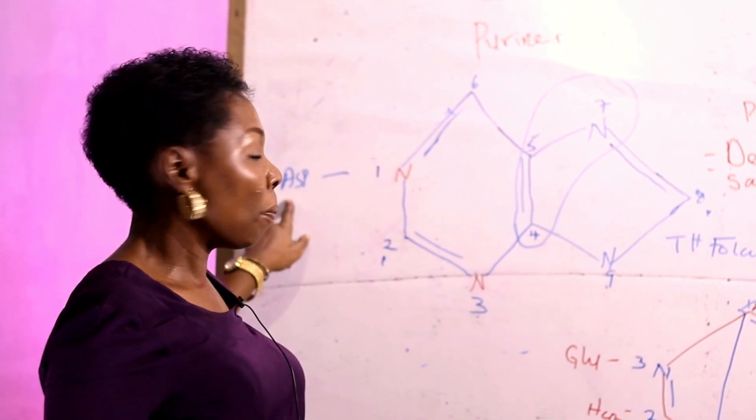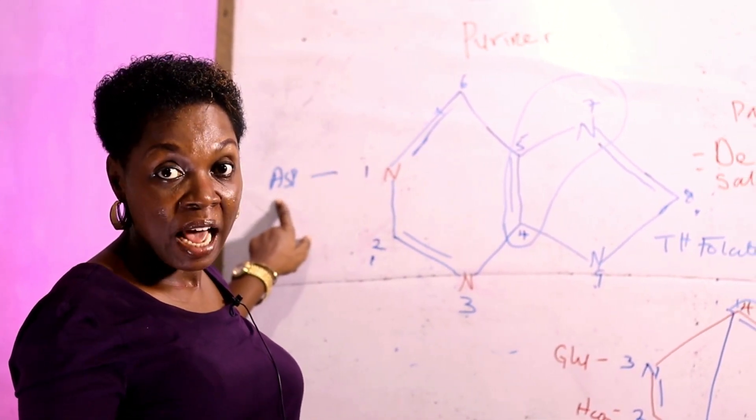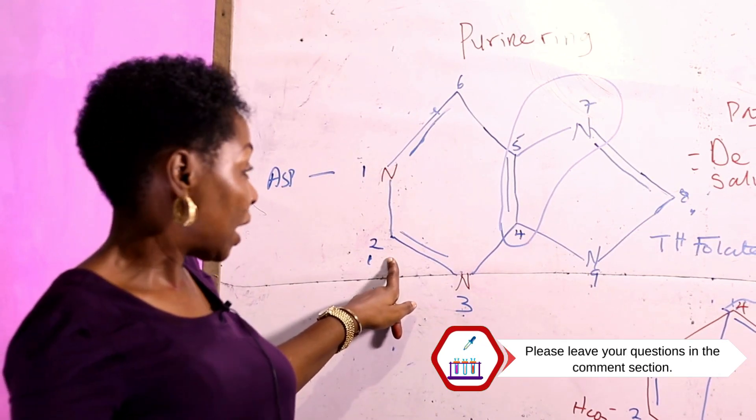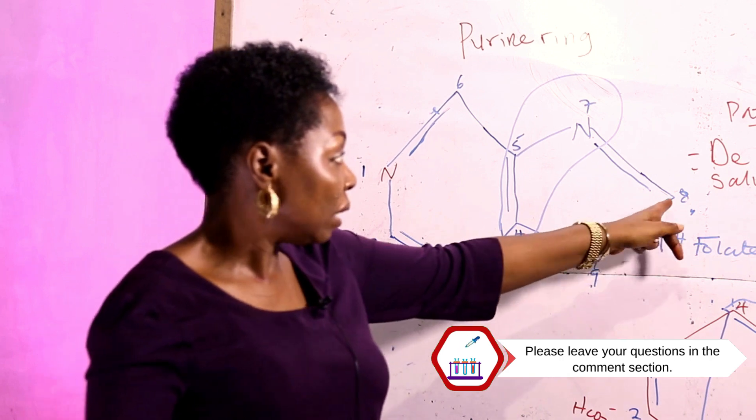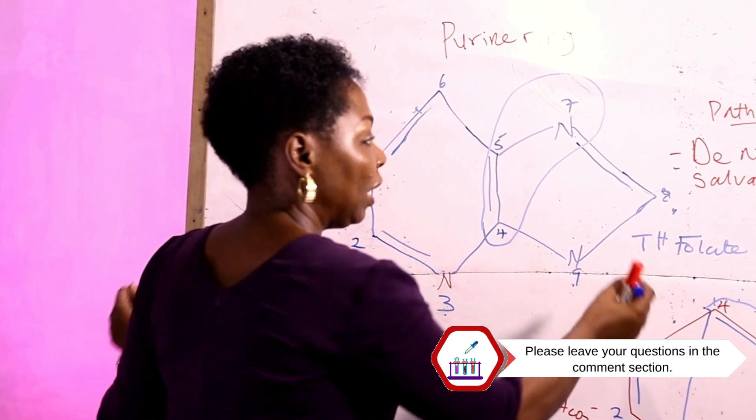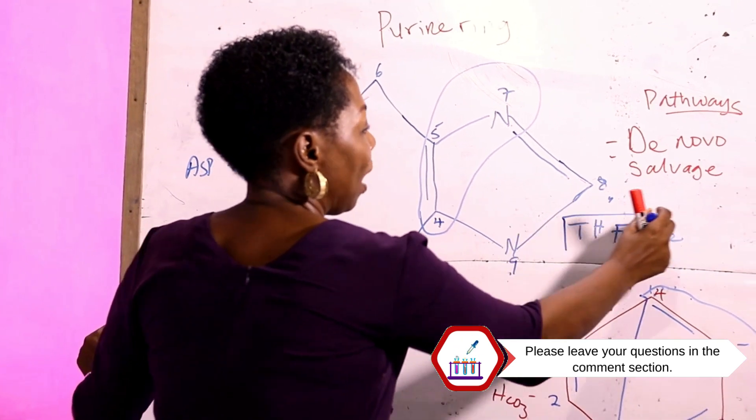this nitrogen is supplied by the amino acid aspartate. Going to position 2, which is a carbon atom, and position 8, it's supplied by folate or tetrahydrofolate.